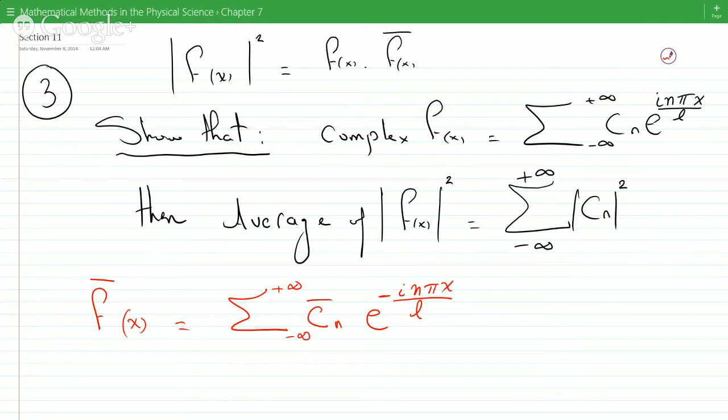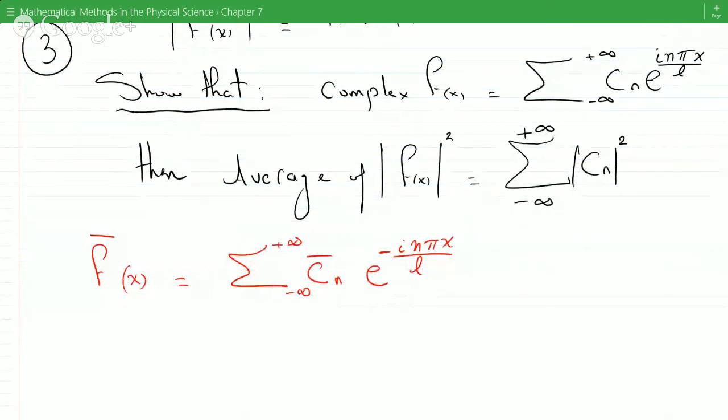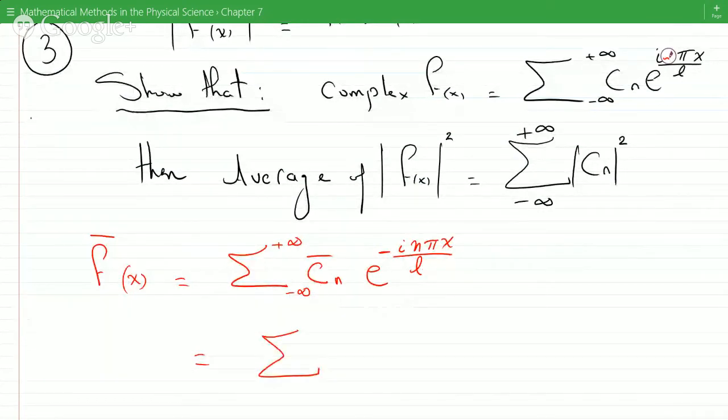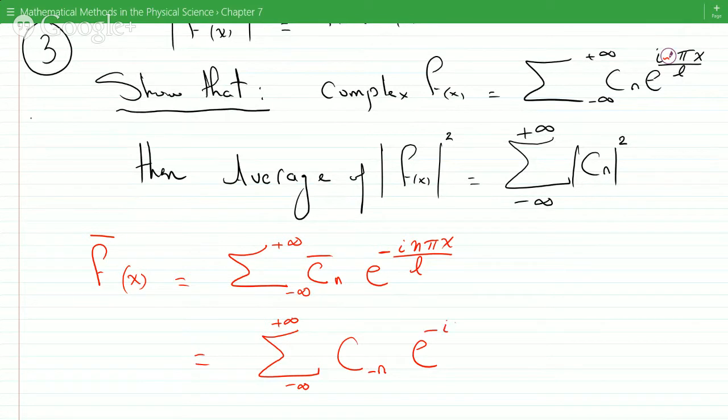And now the complex conjugates of those coefficients are nothing but the coefficients with n divided by minus n, minus infinity to plus infinity, F e to the minus i n pi x over L.